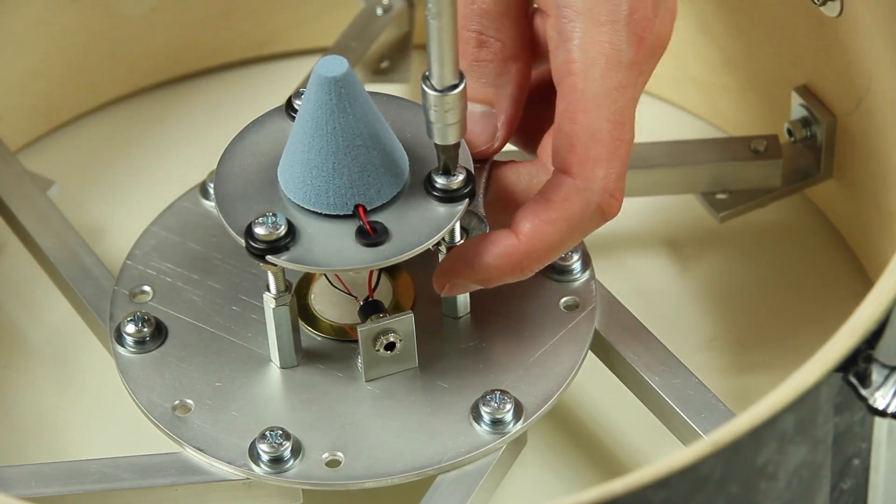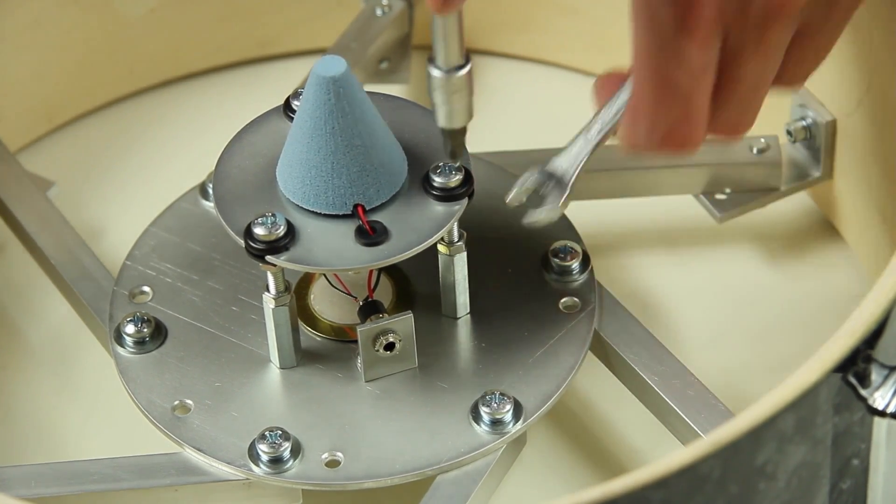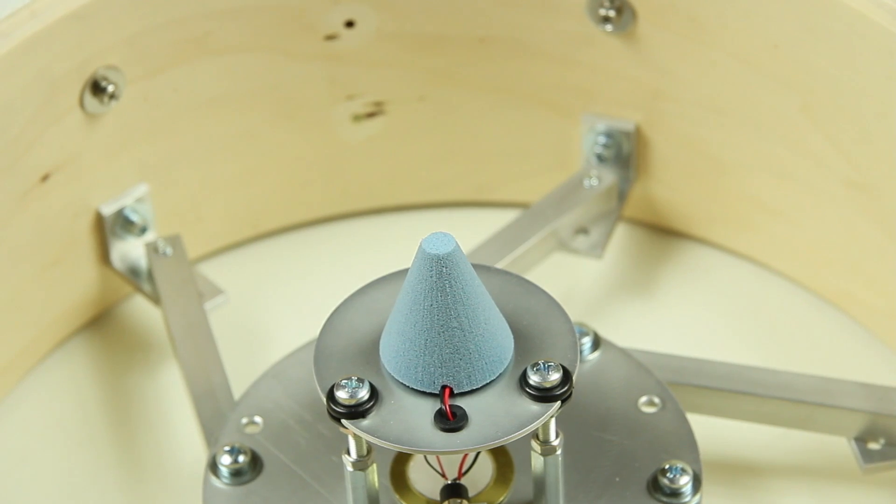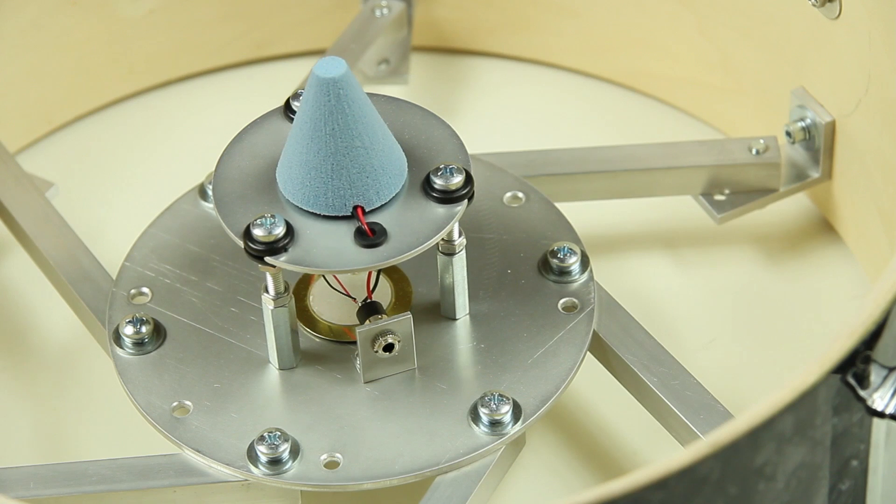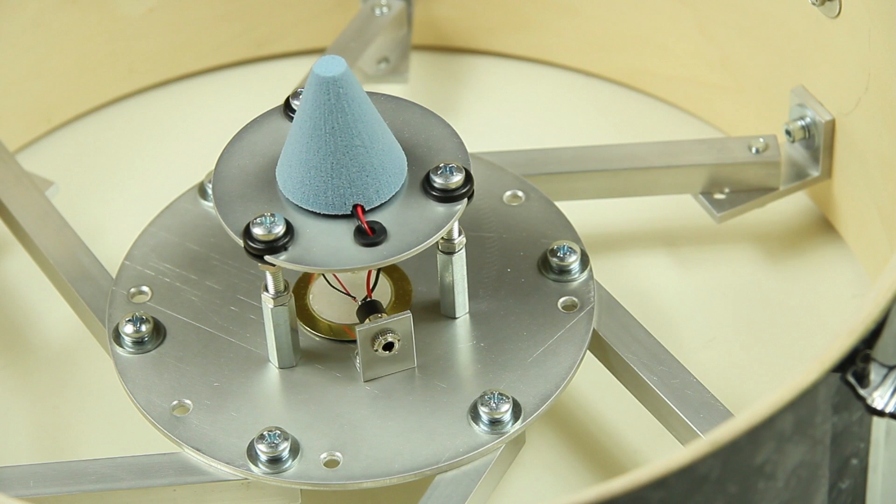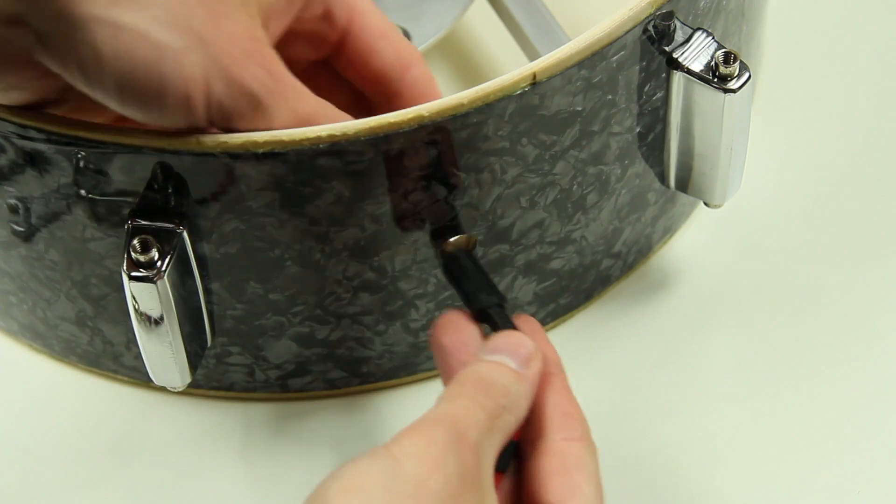As soon as the height is adjusted, the counter nuts can be tightened again. It is important that all three bolt heads have the same height level. In case the head trigger is not adjustable through the elevation screws, the constellation of the angles and mounting arms has to be changed. We use an air vent adapter cable from a previous video.